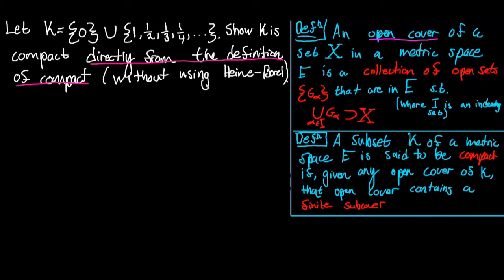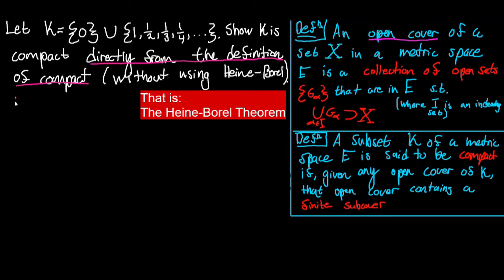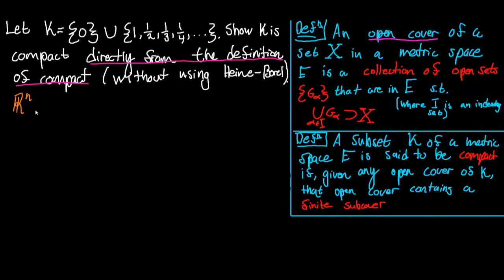If we were to use Heine-Borel, we would be able to use the fact that any subset of R^n that is closed and bounded — where the bolded Z with a plus underneath is short for positive integers — any subset of R^n that is closed and bounded is also compact.